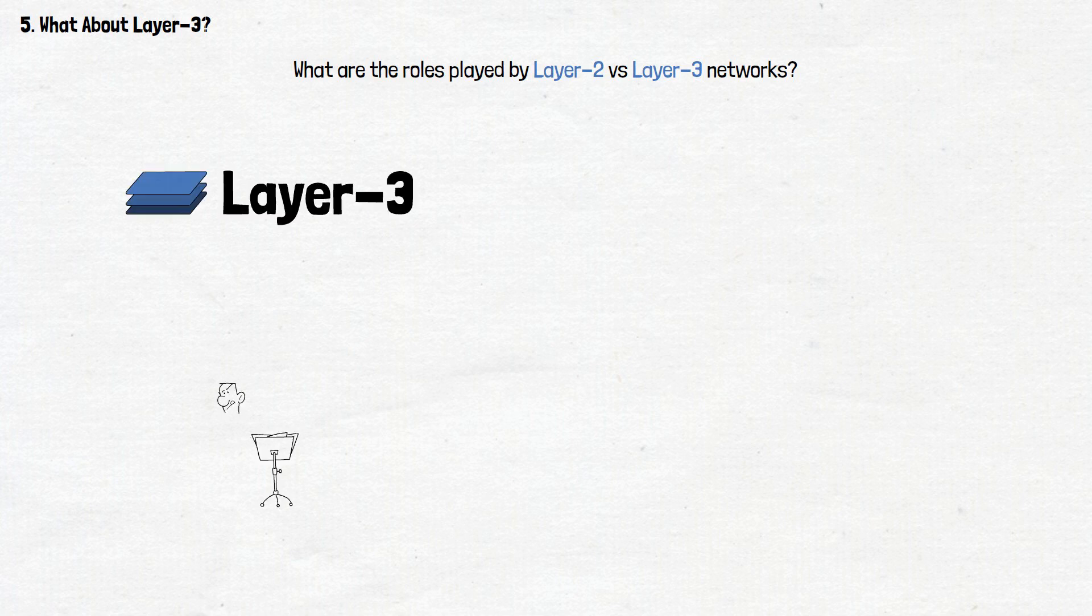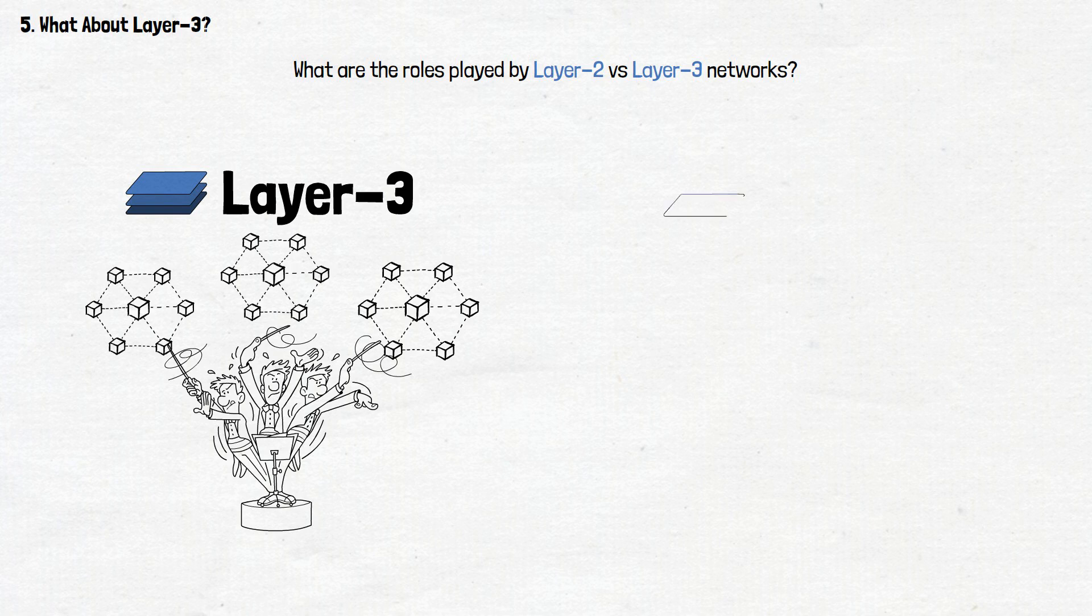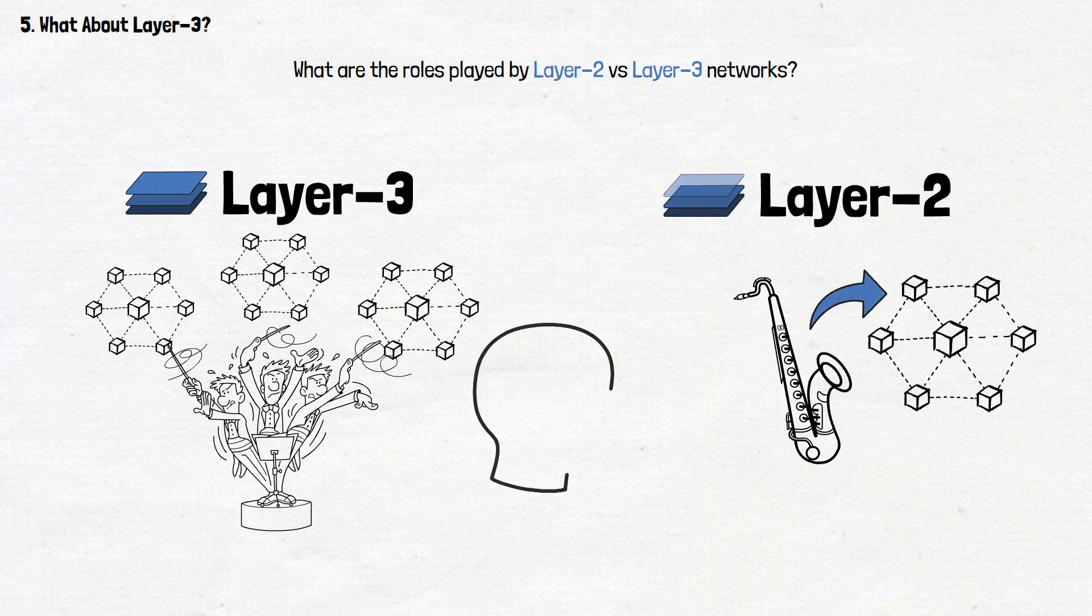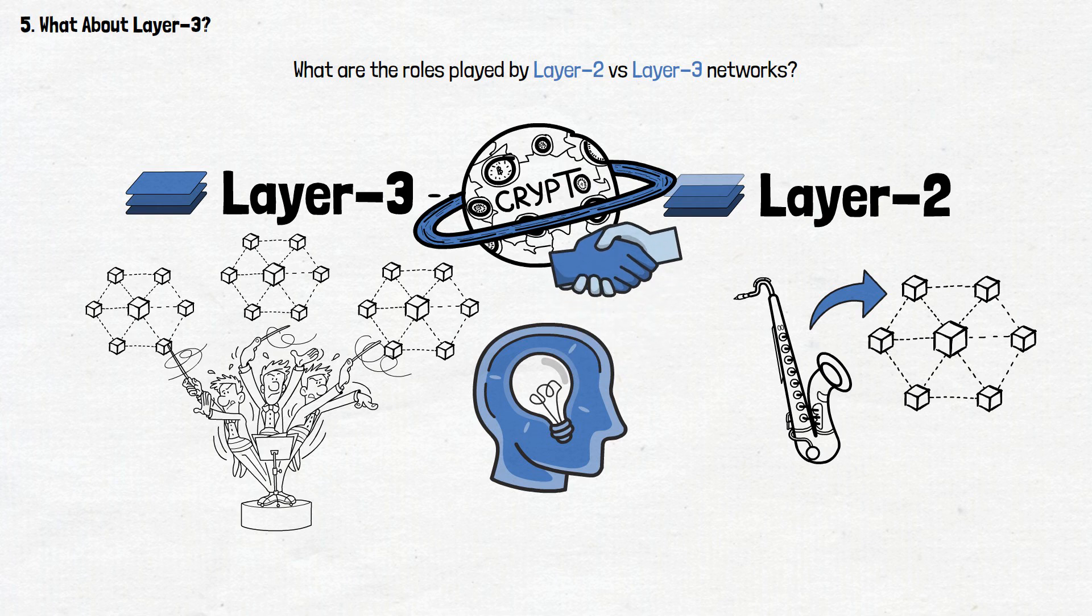So, what are the roles played by Layer 2 vs Layer 3 networks? To put it short, Layer 3 is like the maestro conducting a symphony of blockchains, while Layer 2 refines the individual instruments within a single blockchain. And, actually understanding how all of these solutions work together can show us how they expand the crypto landscape, fostering collaboration and connectivity among diverse networks.